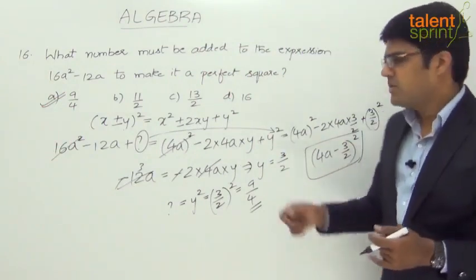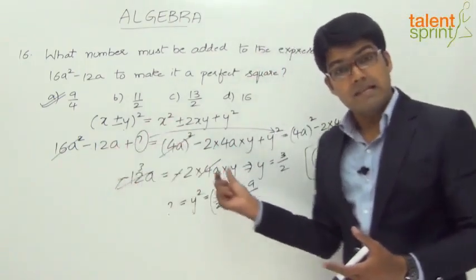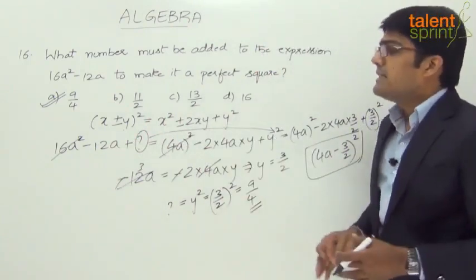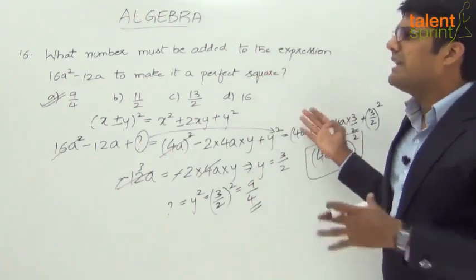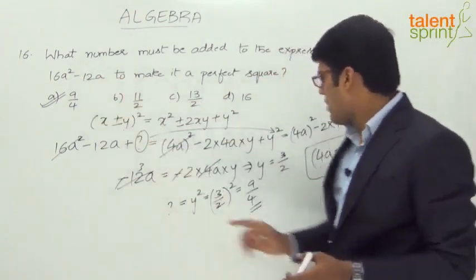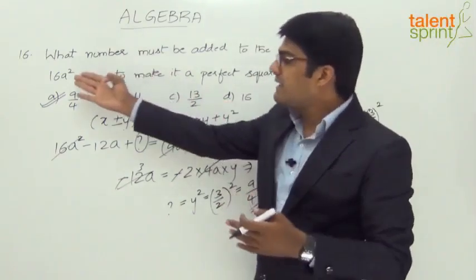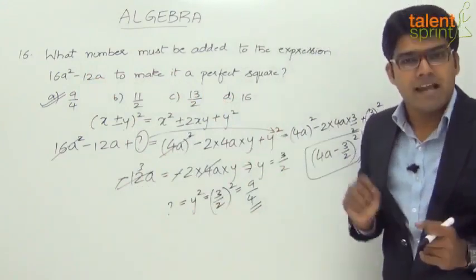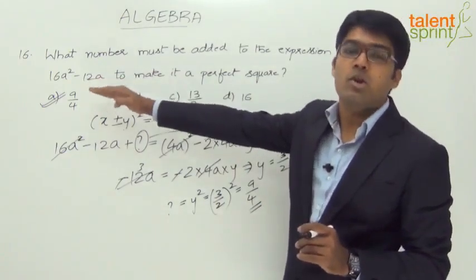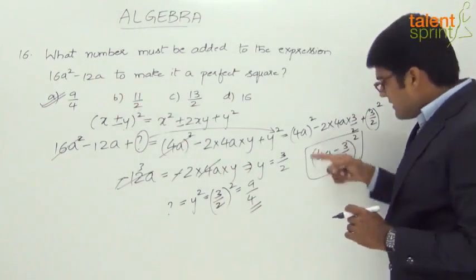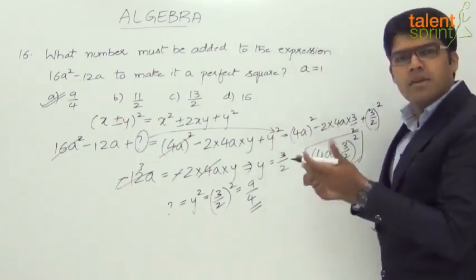That's one way to solve this. You can also just look at the 2xy part and determine what has to be added. However, there is another method: since the answer is clearly independent of a — whatever value a takes, 4a - 3/2 whole square is a perfect square — we can substitute a specific value for a to simplify. Let's assume a = 1.